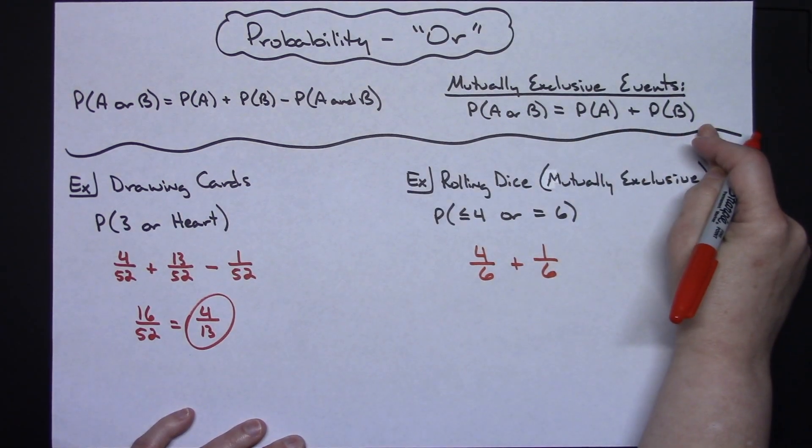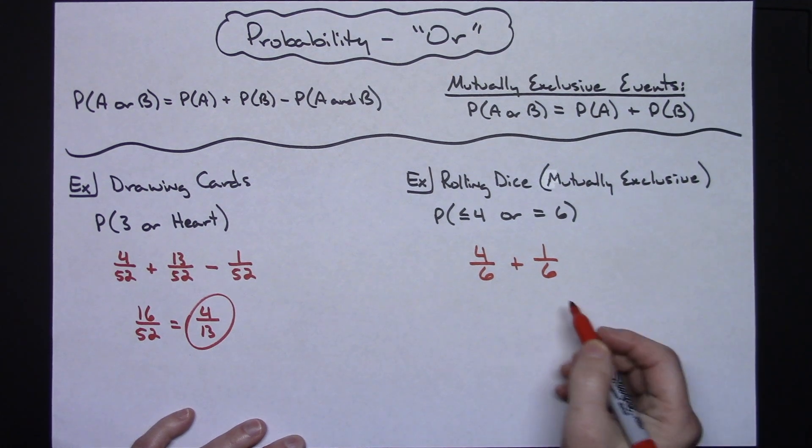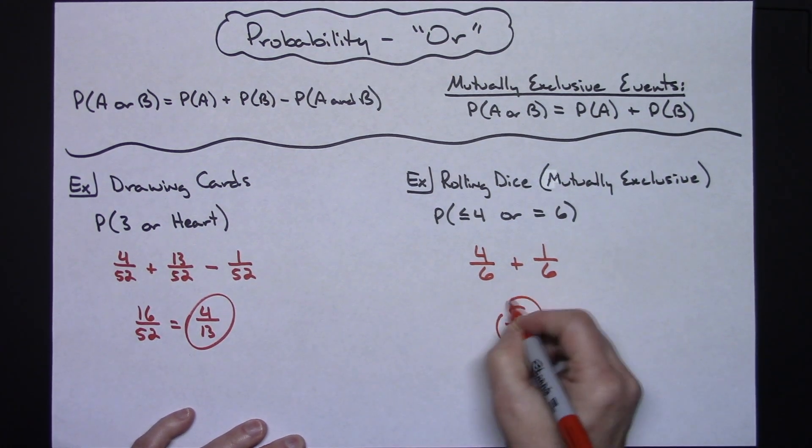I'm using the mutually exclusive formula so all I have to do is add those two and I'm gonna get five sixths.